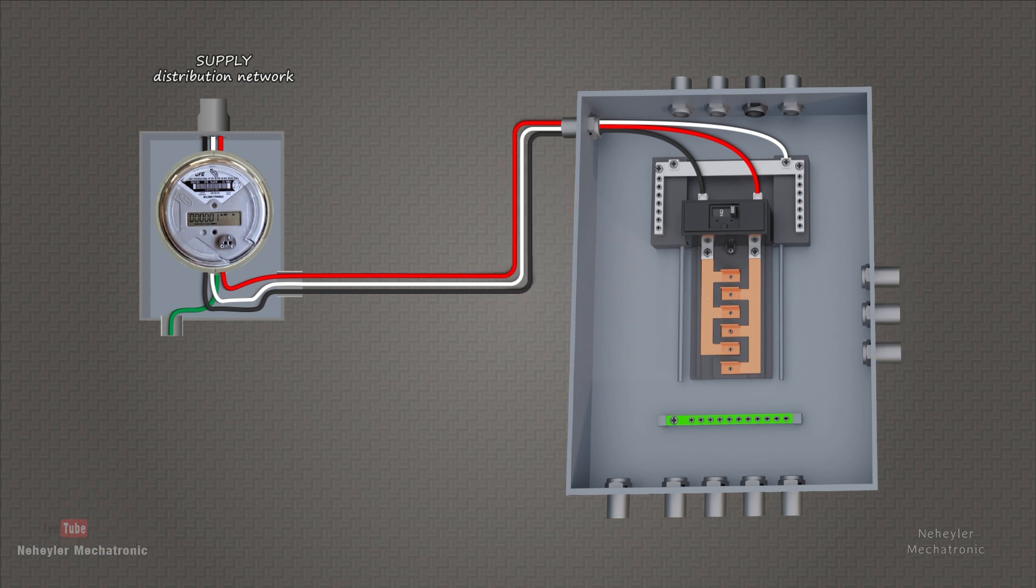To continue with the assembly of the electrical panel, we must disable the main switch and remove the meter. In this way, we would no longer have electrical energy reaching the panel and thus carry out the assembly and wiring of the other distribution switches.